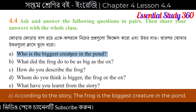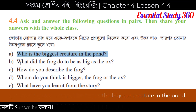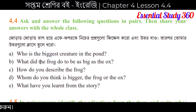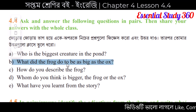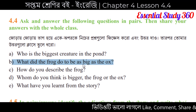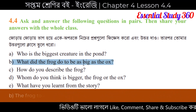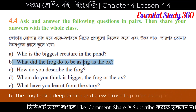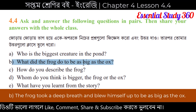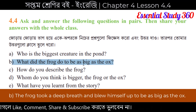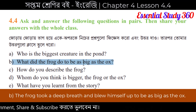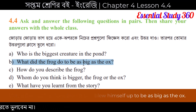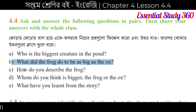Question B says: what did the frog do to be as big as the ox? The frog tried to become as big as the ox — so how did it do that? The answer is: the frog took a deep breath and blew himself up to be as big as the ox. That means the frog took a deep breath and inflated itself.